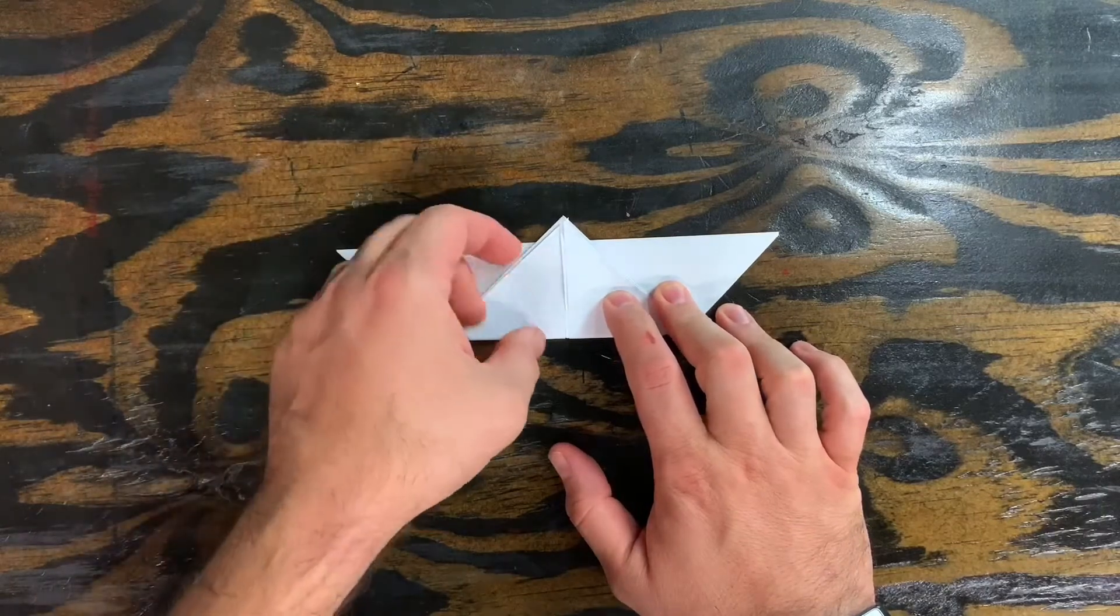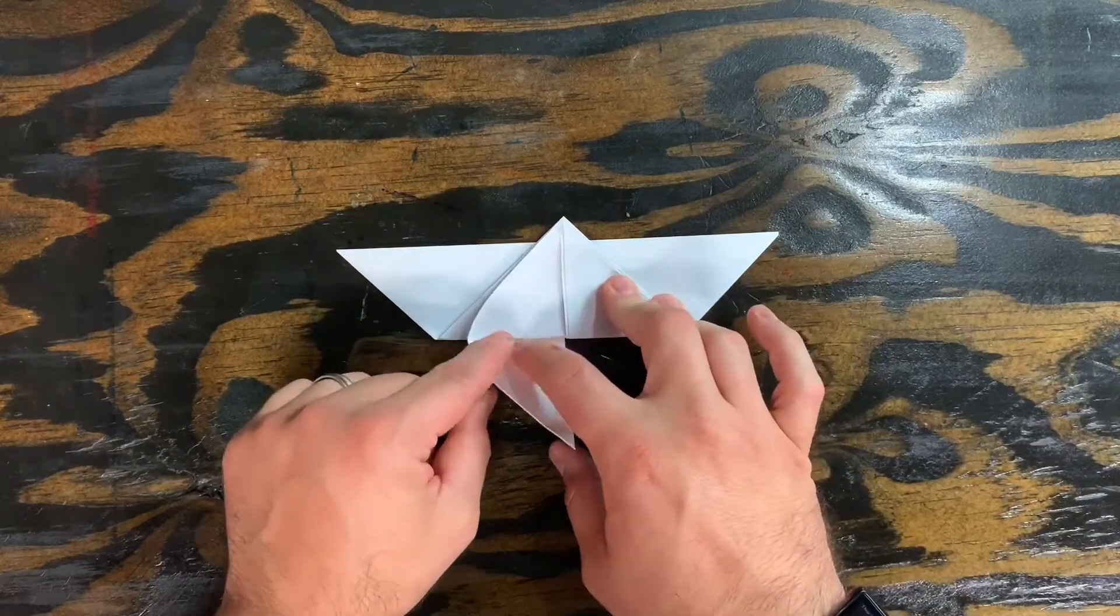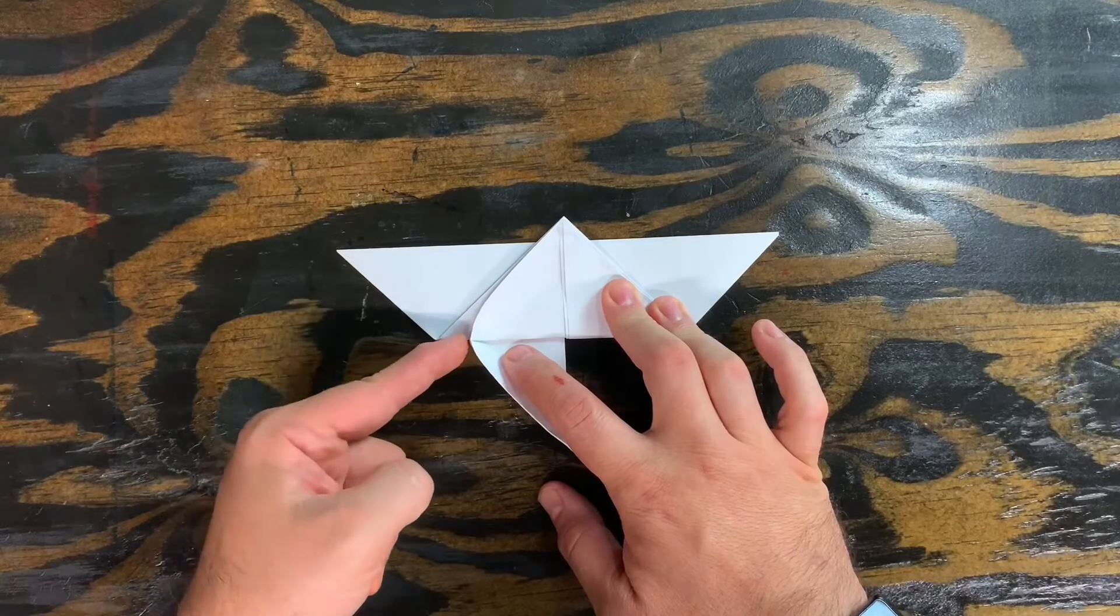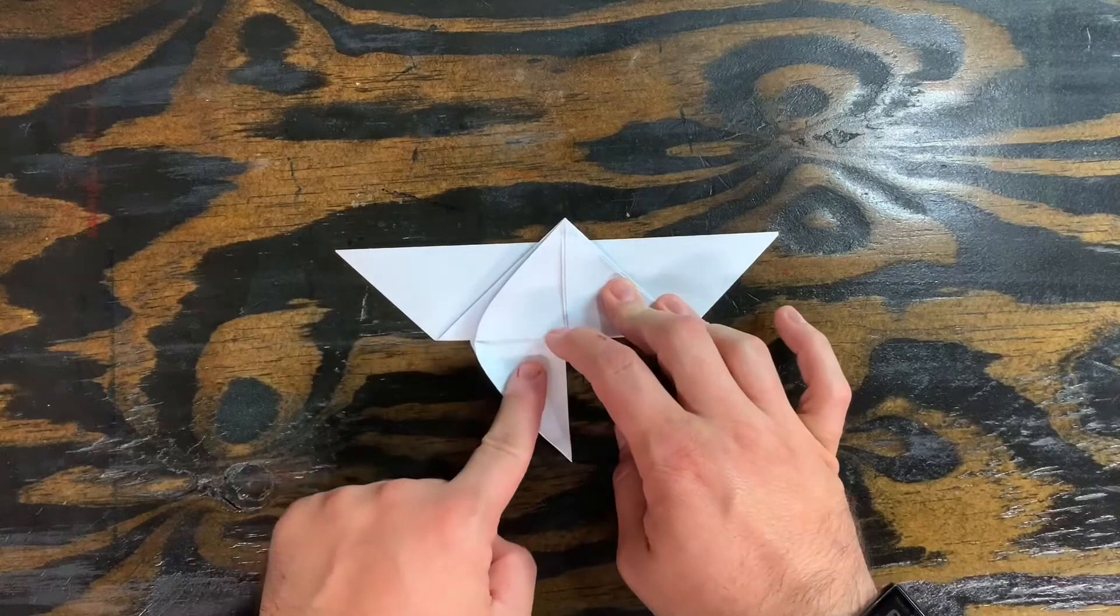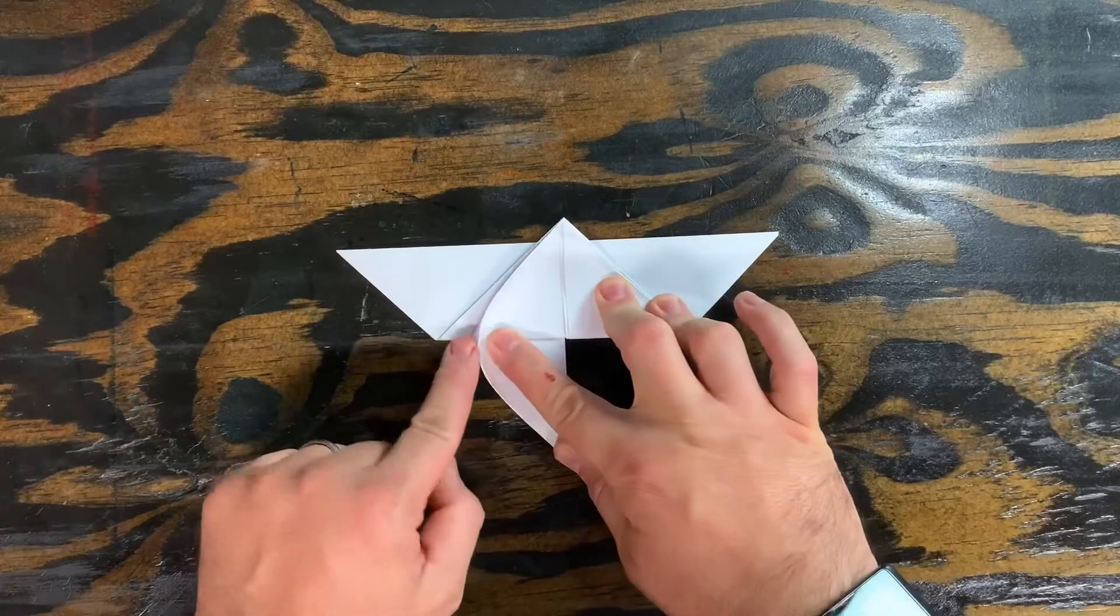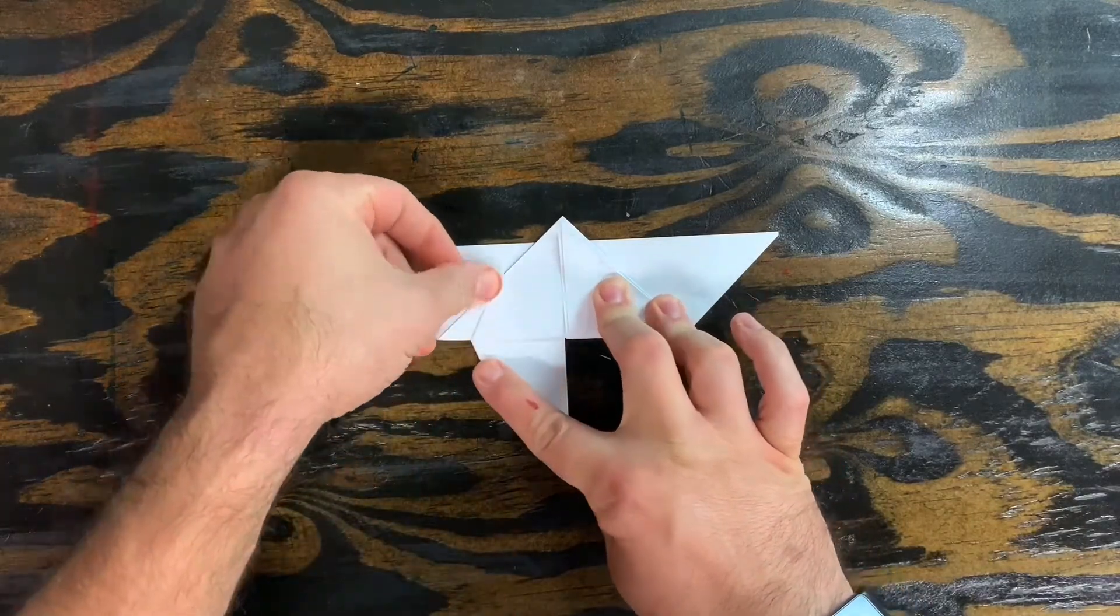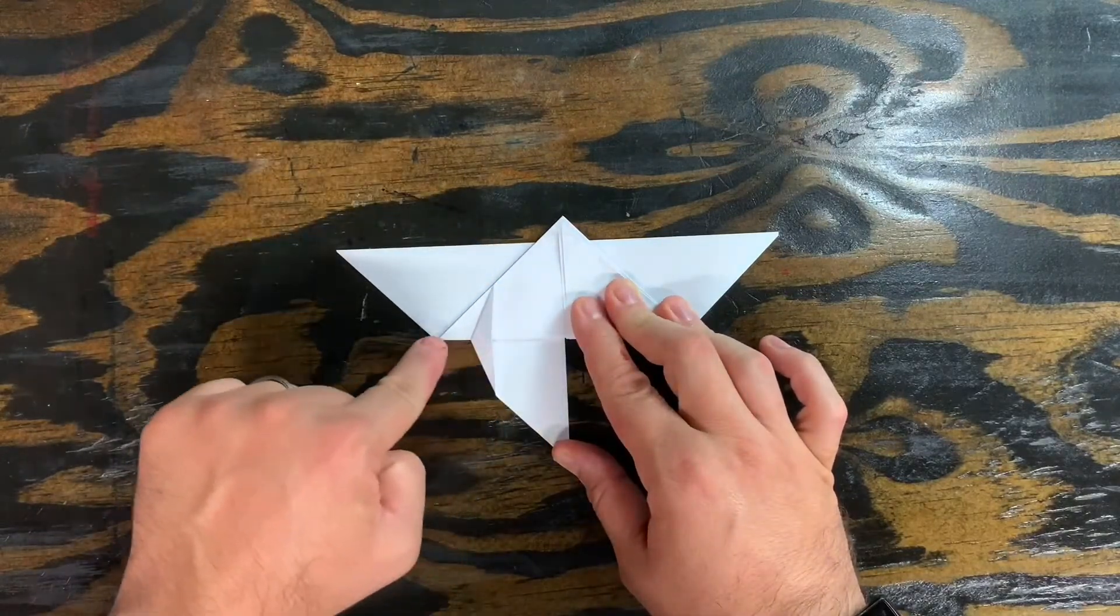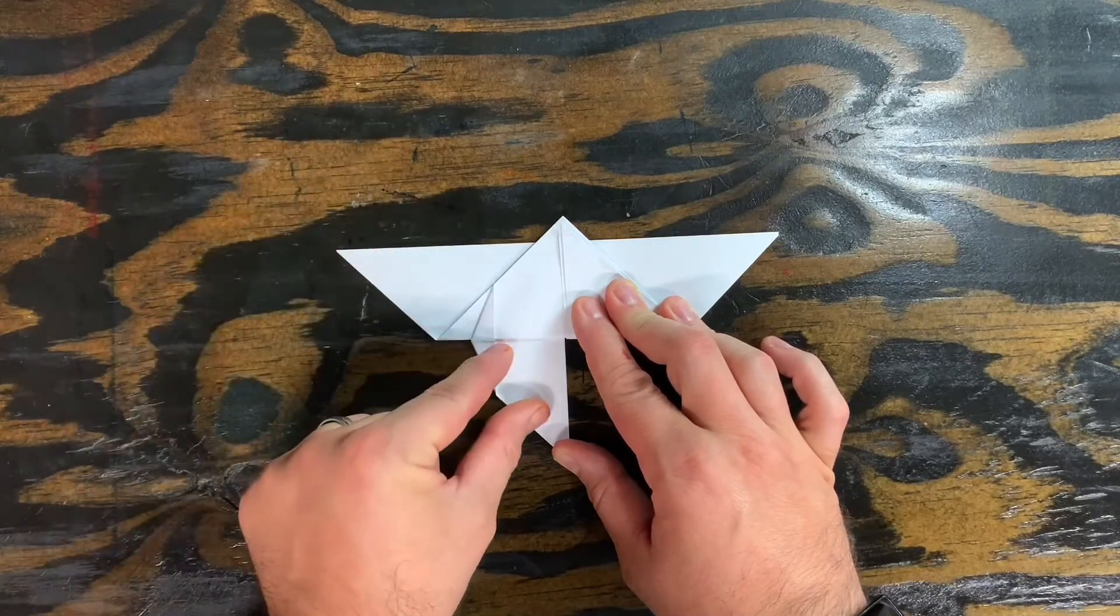Now we're gonna take those two flaps right here and we're gonna fold them each down. As you do that this corner is gonna pop up a little bit. That's a good thing. So we're gonna continue, slide that point all the way down and then flatten the part that popped up just like that. The reason that's good is because it creates this space right here to separate the top of the butterfly wing from the bottom of the butterfly wing.